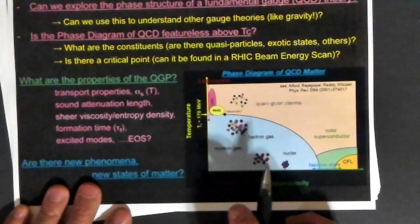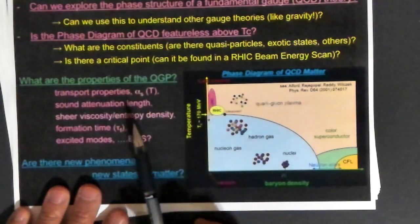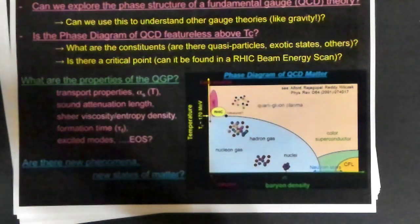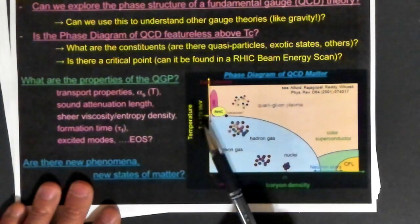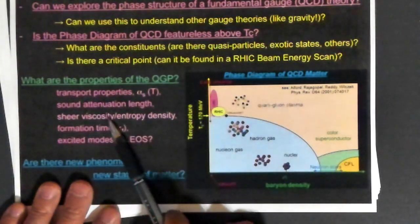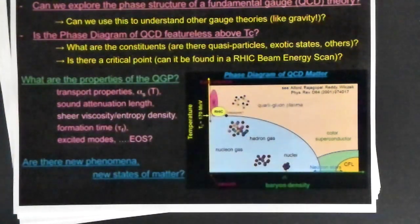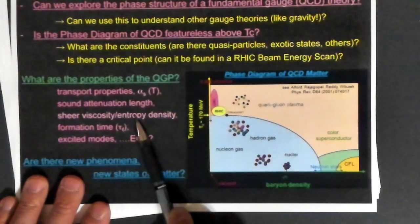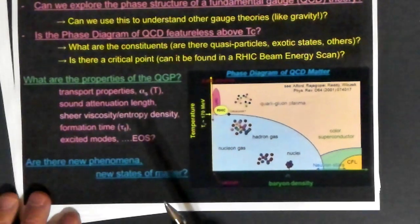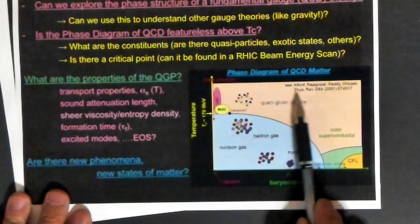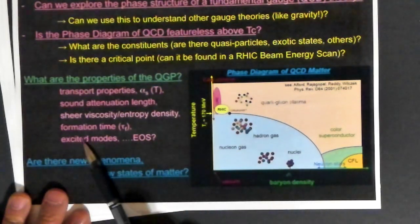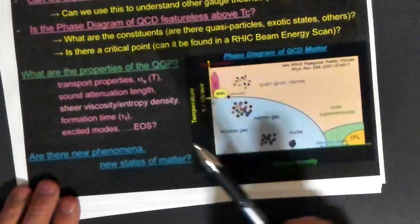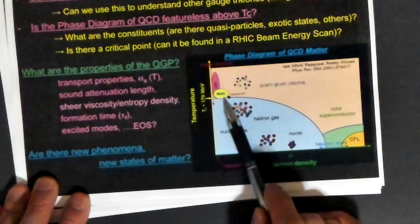There are many things people want to know about the quark-gluon plasma — the transport properties, for instance: how does sound attenuate through the medium, what is the viscosity of the system, how syrupy is it when you try to stir it up? You can measure this as a ratio of viscosity to entropy — we'll talk about that next time. There are also questions about the formation time of the quark-gluon plasma, the equation of state, and the excited modes in these non-equilibrium systems. You might also be interested in whether there are new phenomena like new states of matter to explore.